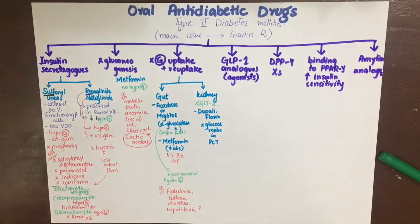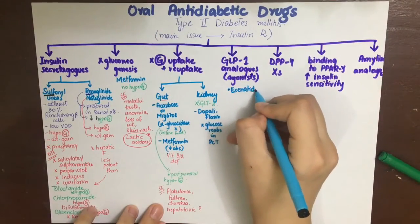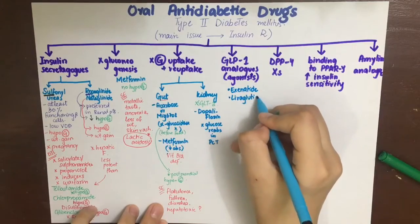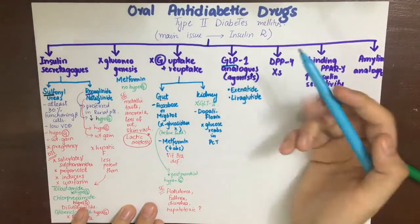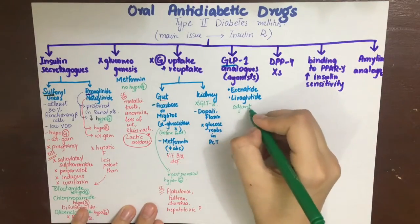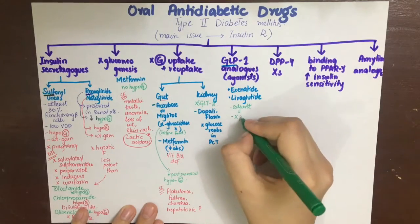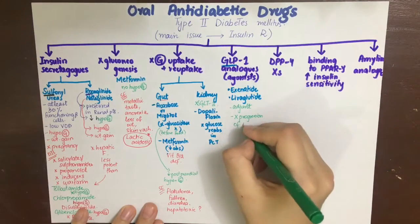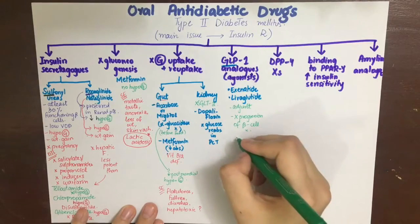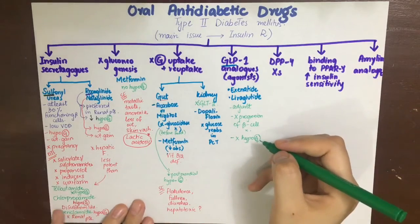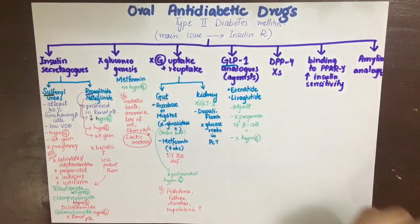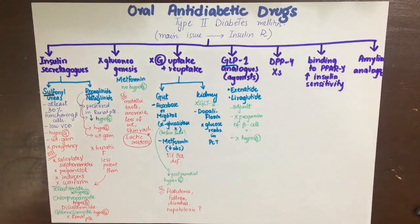The GLP-1 analogues or agonists include mainly exenatide and liraglutide. Endogenously produced GLP-1 has a very short half-life of about one to two minutes and is rapidly degraded by dipeptidyl peptidase 4. These analogues are more resistant to this enzyme and thus are not degraded. They are used as adjunct therapy, help prevent progression of beta cell failure, and do not cause hypoglycemia on their own, but can cause hypoglycemia in combination with other antidiabetic drugs.